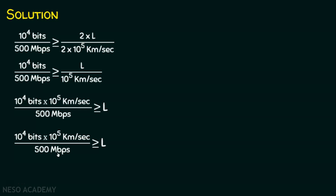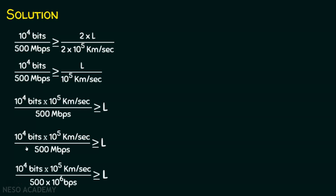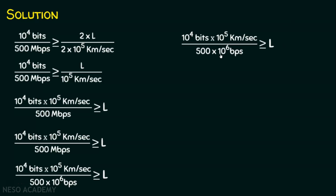Since 500 megabits per second equals 500 × 10^6 bits per second, the denominator becomes 500 × 10^6. Simplifying 10^5 / 10^6 leaves 10 in the denominator. The bits units cancel, retaining kilometers per second. We then compute 10^4 / (500 × 10) = 2 kilometers, so L ≤ 2 kilometers. The maximum length is 2 kilometers.